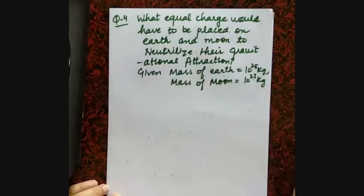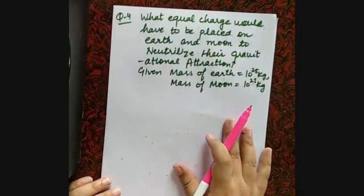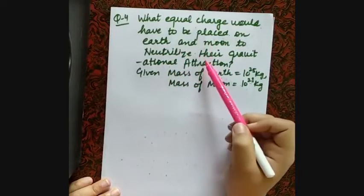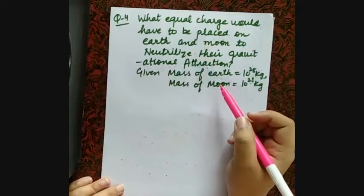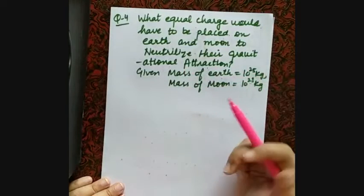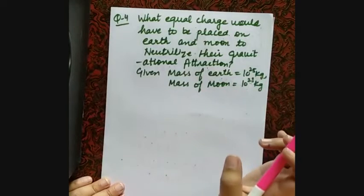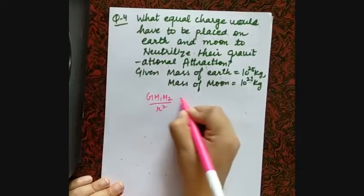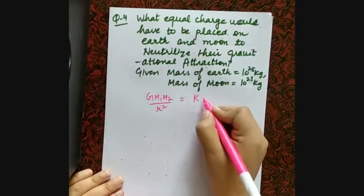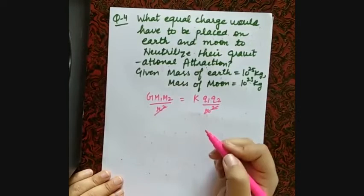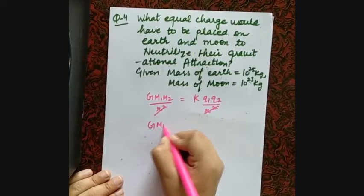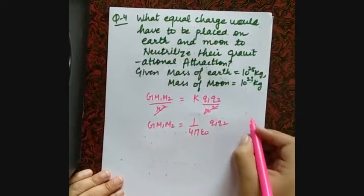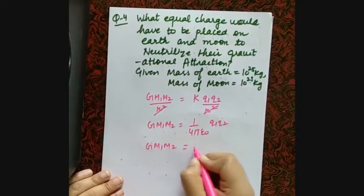Question number four: what equal charge would have to be placed on Earth and Moon to neutralize their gravitational attraction? We compare electrostatic force with gravitational force. Setting them equal: G×M1×M2/r² = (1/4πε₀) × Q1Q2/r². Cancelling r² from both sides: G×M1×M2 = (1/4πε₀) × Q². Since charges are equal, Q1 = Q2 = Q.